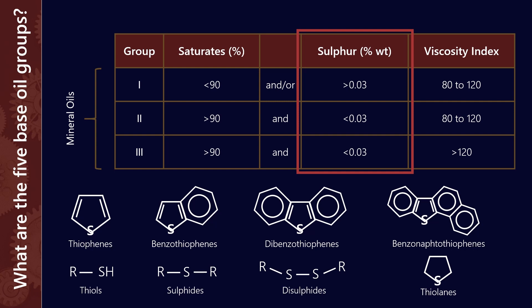But there are also sulfides and thiols, as well as disulfides. These are all sulfur-containing compounds. Now we try and remove those through a desulfurization process as we move from group 1 to group 3. As we're moving from group 1 to group 3, it's more refined, if you like.